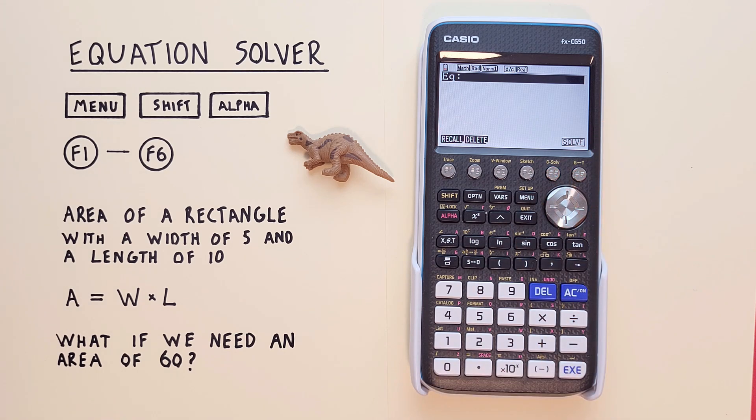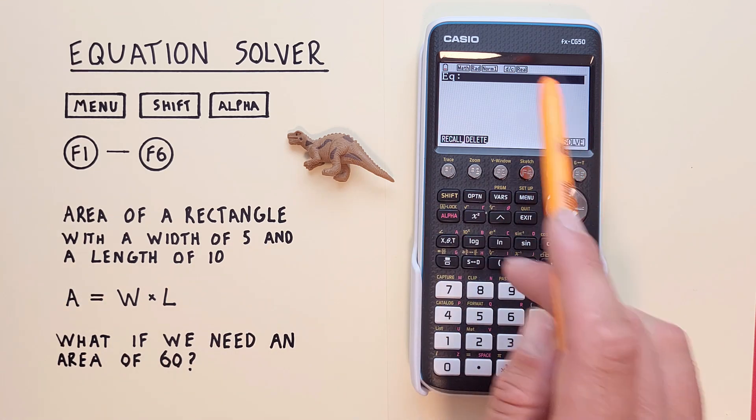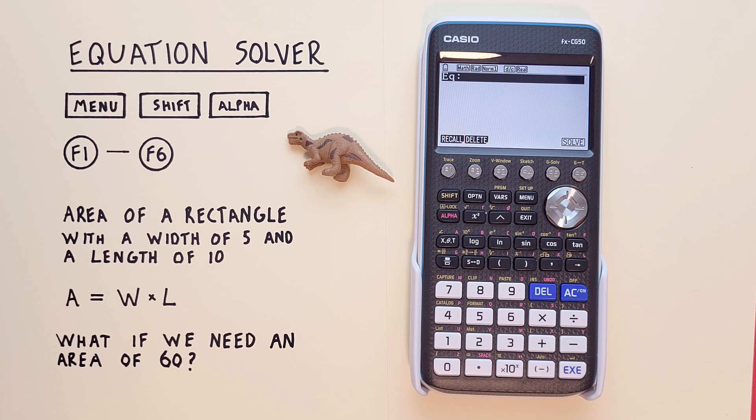If we haven't entered any equations before, this will be blank. And let's start by trying out a simple equation. Let's say we wanted to find the area of a rectangle with a width of 5 and a length of 10.